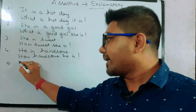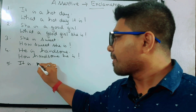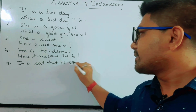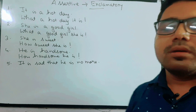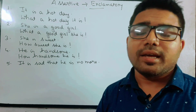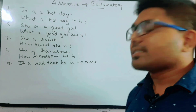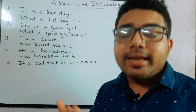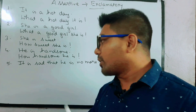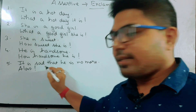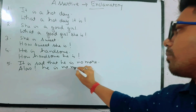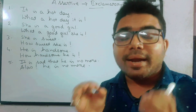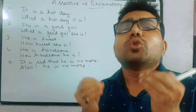Now suppose a sentence like this is given: 'It is sad that he is no more.' Ya dukh ka baat hai ki wo abhi nahi rahe. For this kind of sentence, we have to add an interjection or exclamatory word. Since this is a matter of sadness or grief, we use 'Alas': 'Alas! He is no more.' When it is a matter of sadness, we use the exclamatory word 'Alas.'